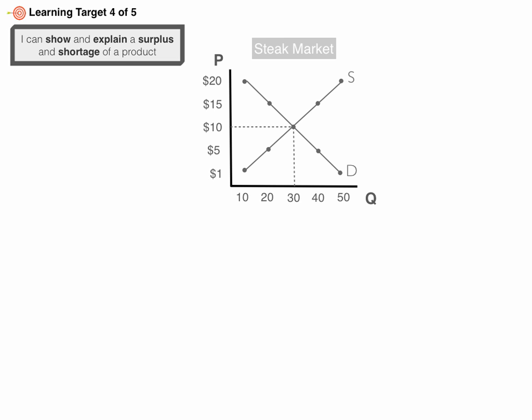Moving to surplus and shortage: why is $10 equilibrium? Let's say you walk into a store and the price of steak is something other than $10. What type of situation occurs? Say the equilibrium price is $10, but for whatever reason, steak was priced at $15.